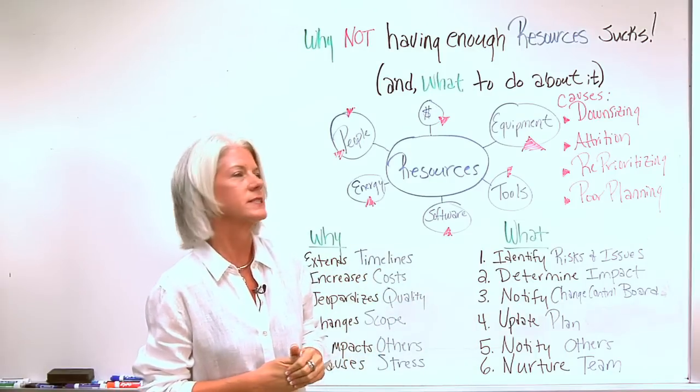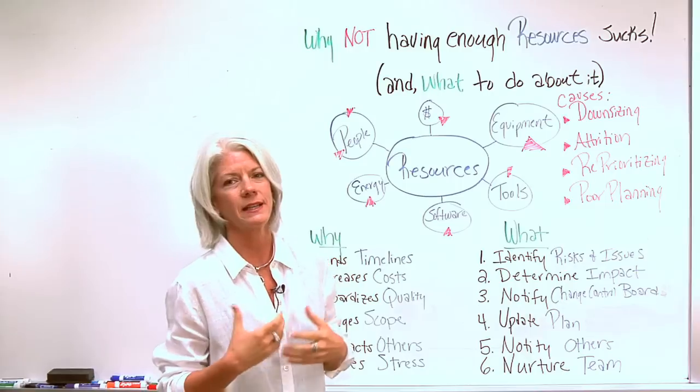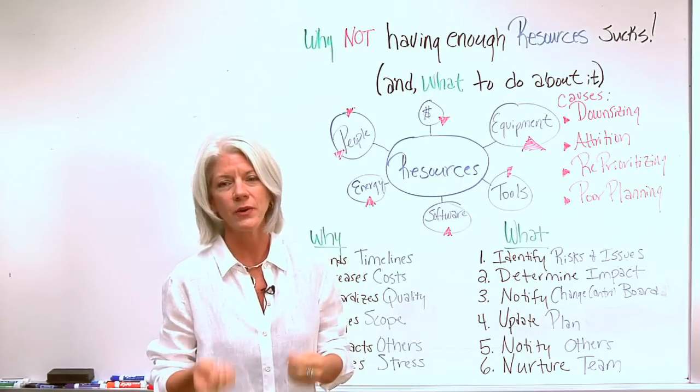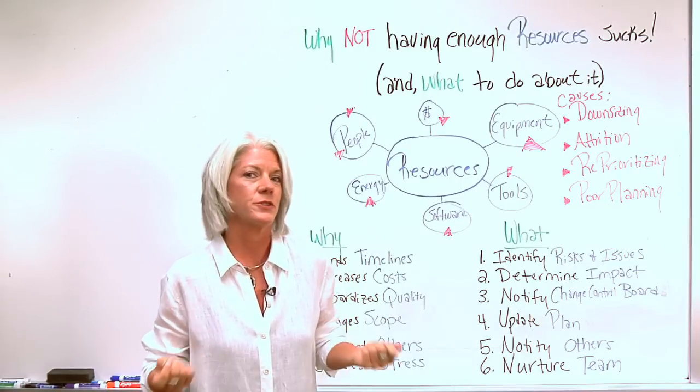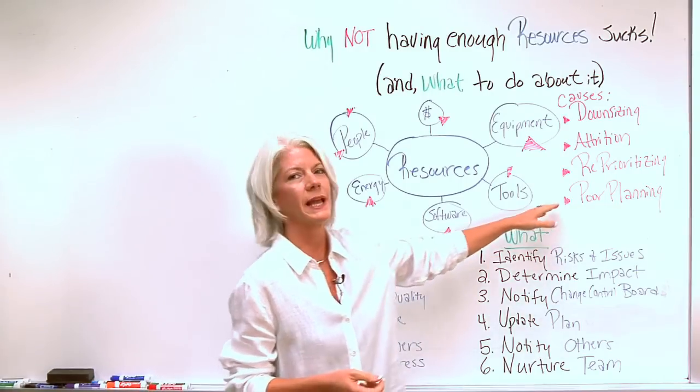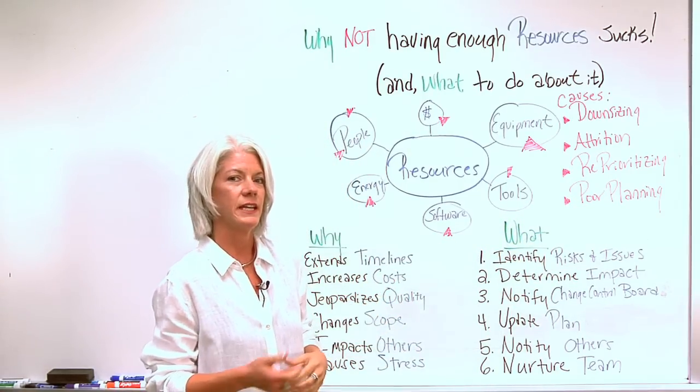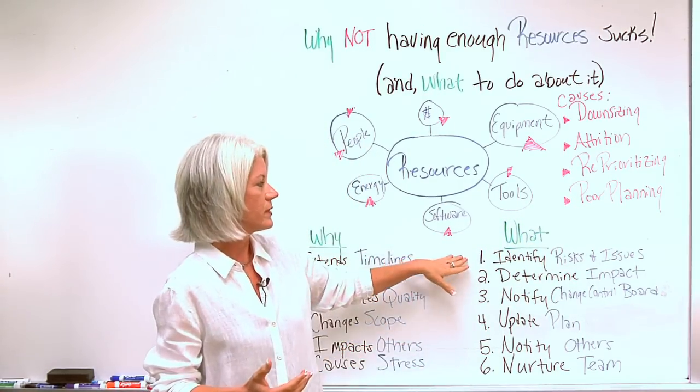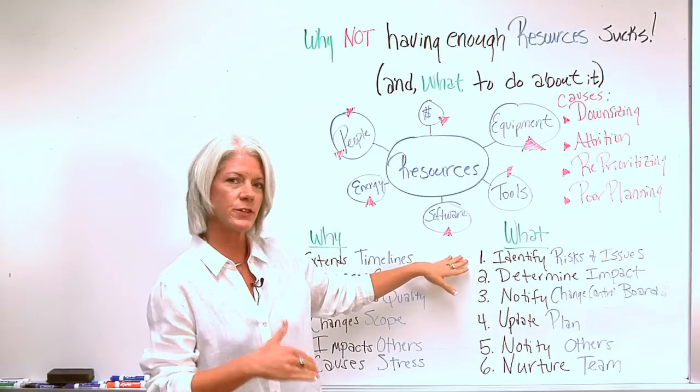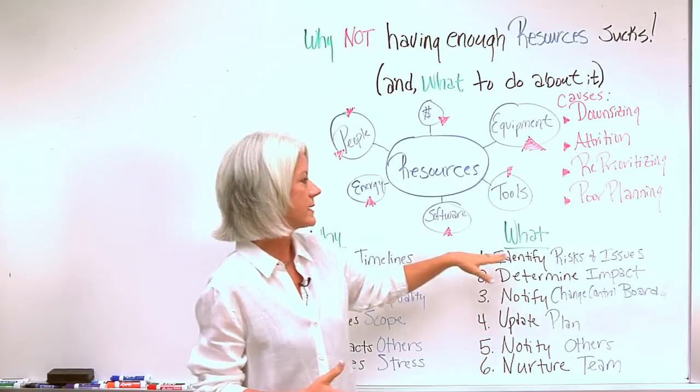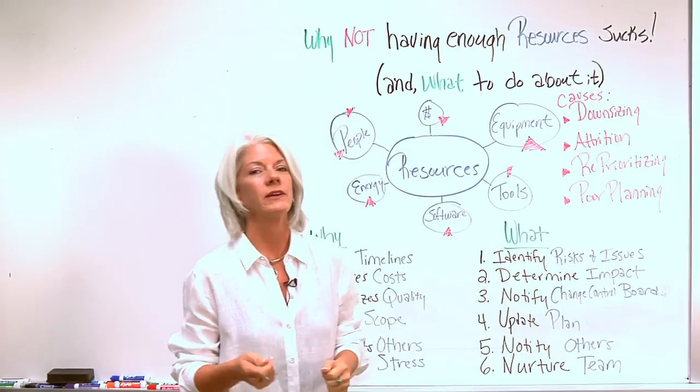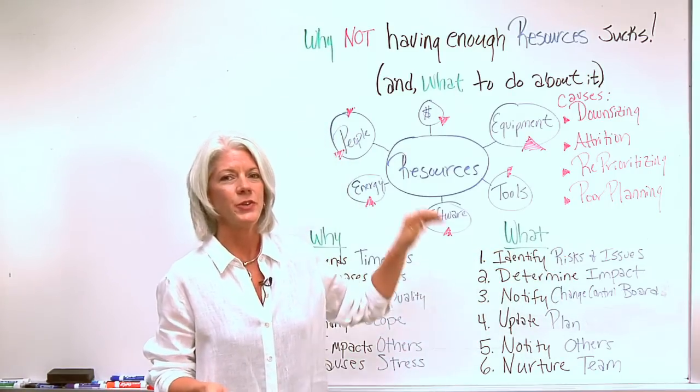So what do we do in those instances? Reminding that a lot of times these are things we don't have control over, but they're still going to happen. The poor planning we are in control of, but a lot of times things occur that we don't have any control over. The best thing we can do is, as soon as we know, identify the risk and issues.